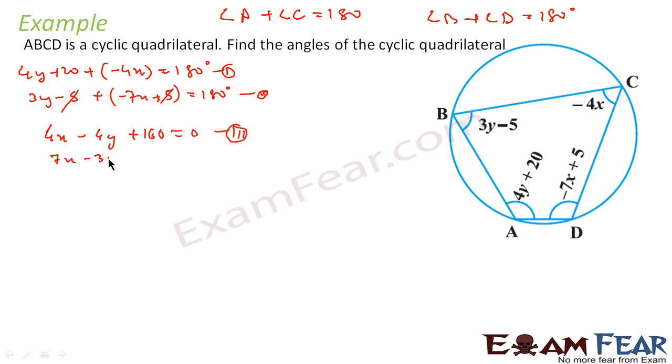Now let me multiply this whole thing by 3. If you do this, the coefficient of y will become 12y in both cases, then I can cancel the y part.